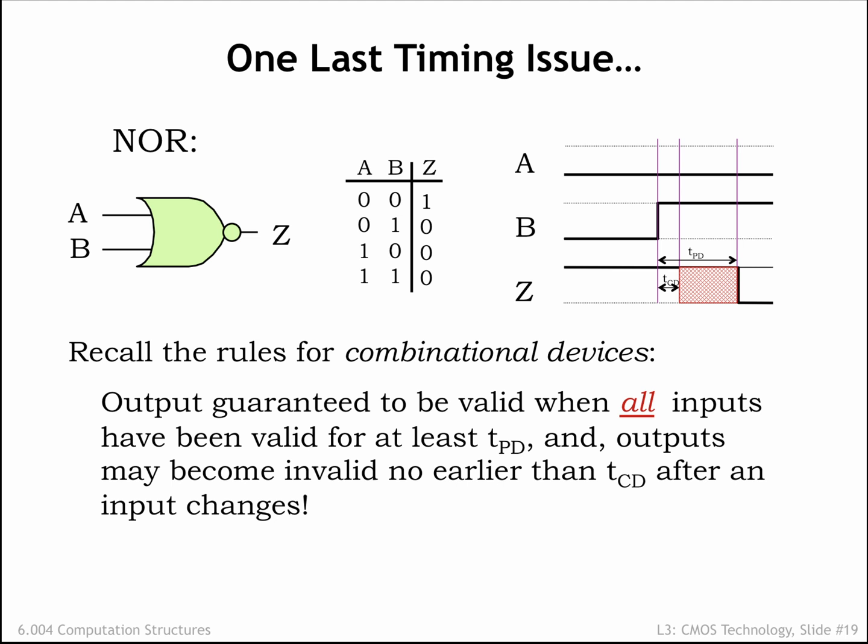As we learned in the previous video, the timing of the Z transition is determined by the contamination and propagation delays of the NOR gate. Note that we can't say anything about the value of the Z output in the interval of TCD to TPD after the input transition, which we indicate with a red shaded region on the waveform diagram.